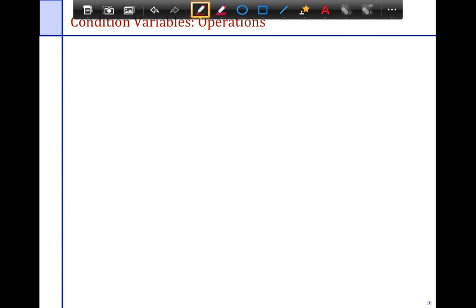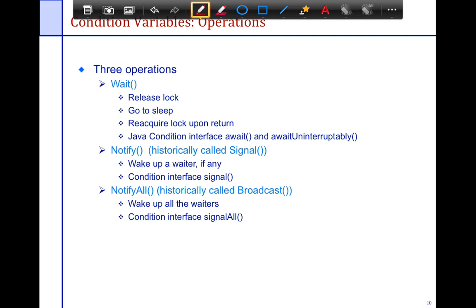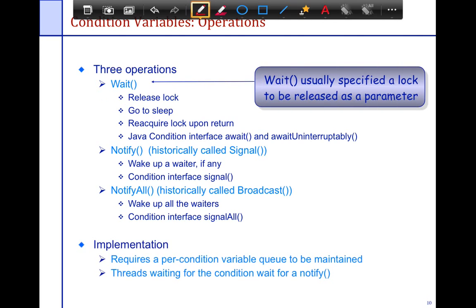So let's look at the overall interface to conditional variables, and then we look at the implementation. So conditional variables need to support three operations. The first one is a wait operation, which says you release the lock, go to sleep, reacquire the lock upon return. Notify, which wakes up a waiter if any, and notify all, which notifies everyone that's waiting on the lock. And we look at the implementation of each of these functions.